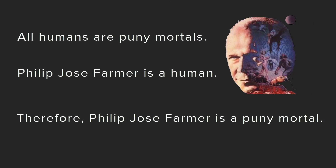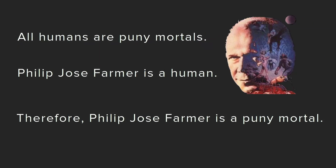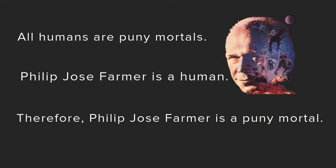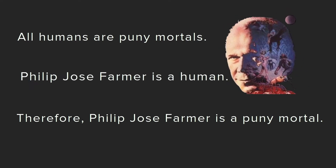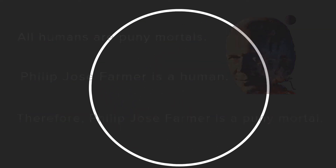The conclusion is already built into the premises. We start with a very general statement that humans are included within the things which are mortal. The definition of human includes mortality. Next, we look at a particular case: Philip Jose Farmer is a human. The definition of Philip Jose Farmer includes humanity. Since humanity is part of the definition of Philip Jose Farmer, that means mortality is also part of Philip Jose Farmer's definition. So, Philip Jose Farmer must be mortal.